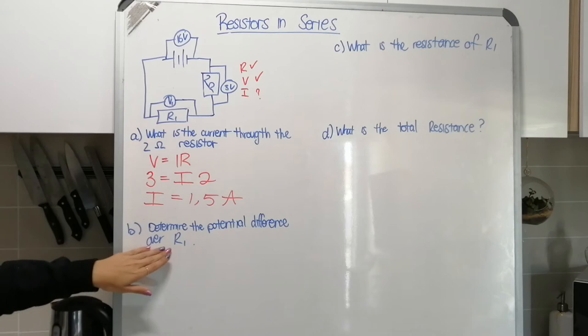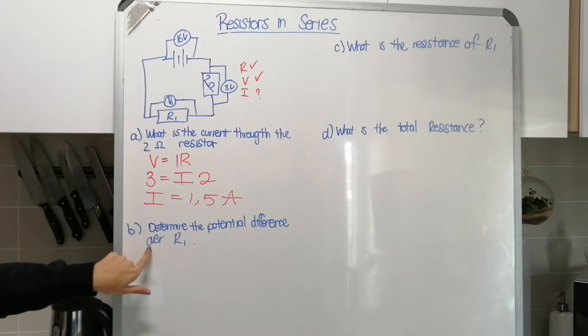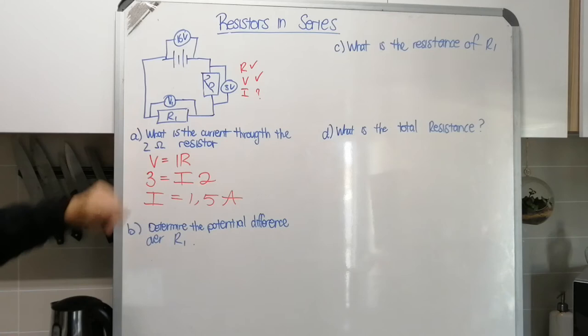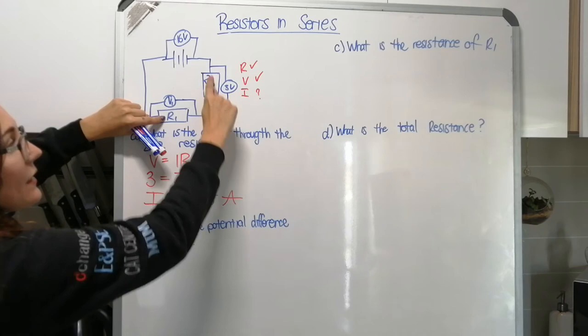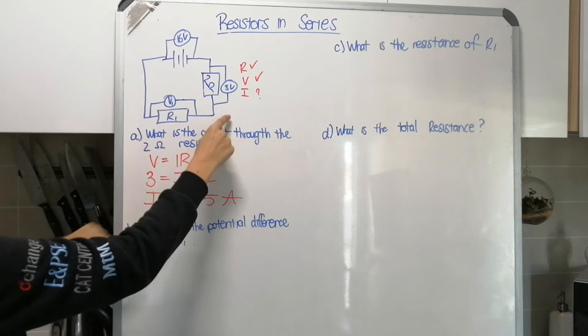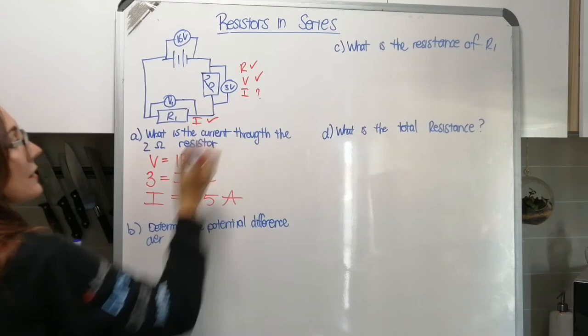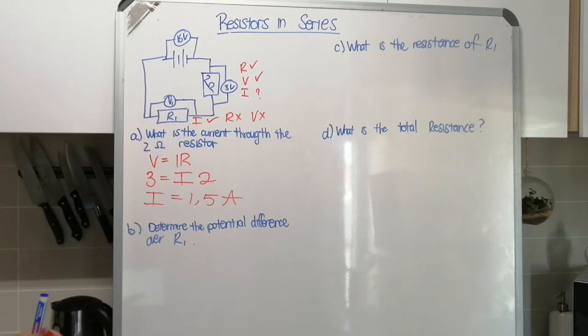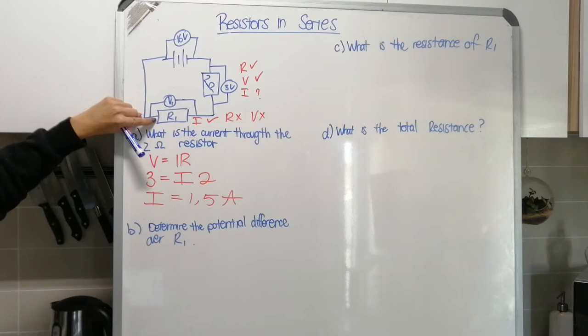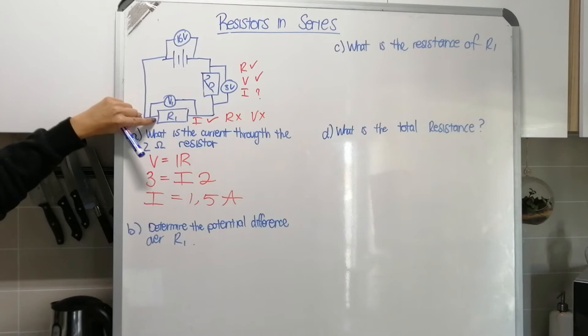Question B: determine the potential difference over R1. Let's check if we can use Ohm's Law. The current here is the same as the current at R1 — it's 1.5 amps — because these are in series. But for this resistor, I know the current yet I don't know the resistance and I don't know the potential difference. So I cannot use Ohm's Law for this resistor. Instead, I have to use my understanding of how things work in a series circuit.